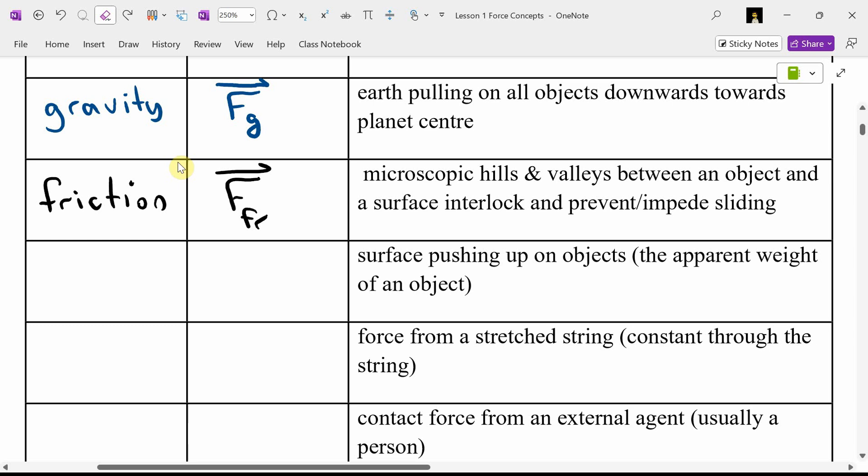What was the name of the force that was actually the surface pushing up on an object, preventing the objects from sinking into the surface? It was also the apparent weight of an object. What did we call it? We called it the normal force.